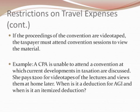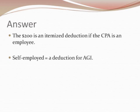If the proceedings of a convention are videotaped, the taxpayer must attend convention sessions to view the material. For example: a CPA is unable to attend a convention at which current developments in taxation are discussed. She pays $200 for videotapes of the lectures and views them at home later. The $200 is an itemized deduction if the CPA is an employee, but if she is self-employed, it is a deduction for AGI.